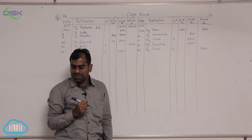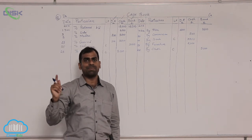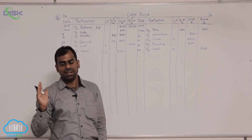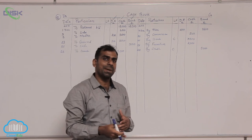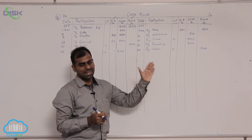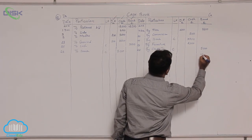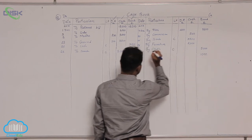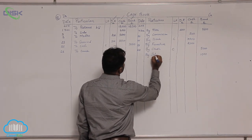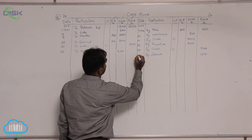Let us move on to the last transaction: on 30th, salaries paid by check. It is a check payment, so we have to record it in the bank column, and since it is a payment, go to the credit side. Enter the amount in the bank column — because it is a check payment. The reason for the payment is salaries, so write 'by salaries'. The date is 30th December.